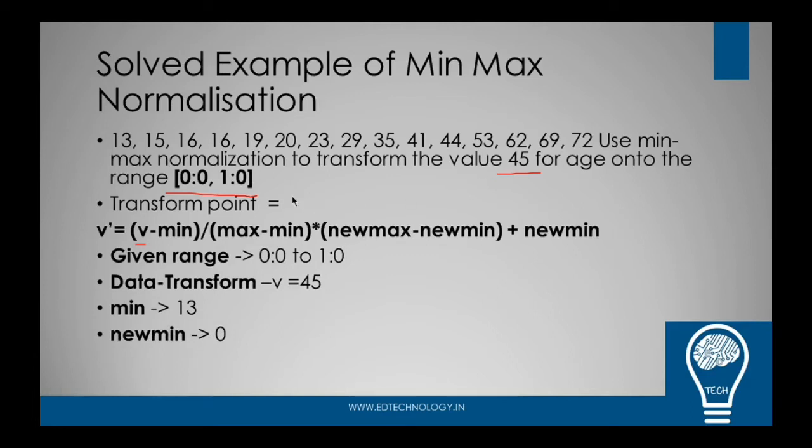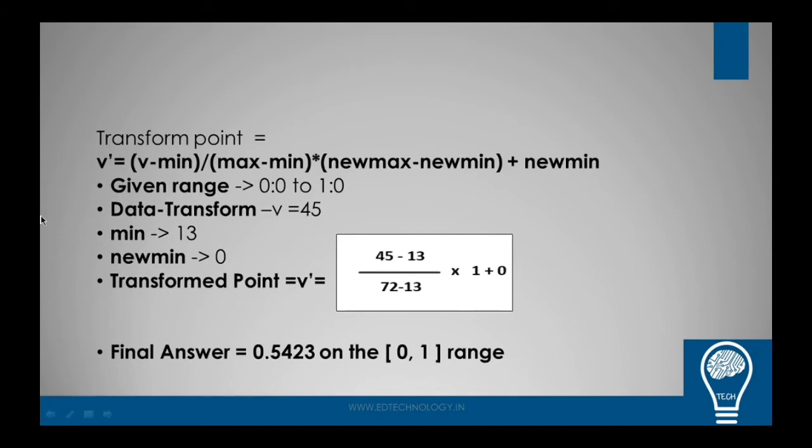When we gather all this data which is listed here into the formula which is above, it will look something like this. We have the formula v minus min, so v is 45 as we know, so 45 minus min which is 13. As you can see it here, it is 45 minus 13. Maximum number in the range is 72, so the denominator is 72 minus 13.